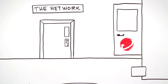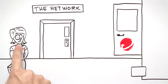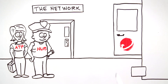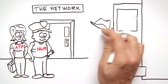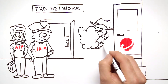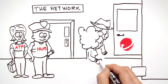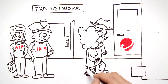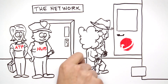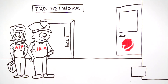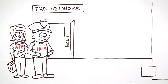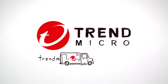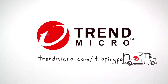Simply put, Tipping Point ATP and NextGen IPS work together to identify, prioritize, and block suspicious objects, defending your organization's network from known, unknown, and undisclosed threats. Trend Micro Tipping Point Integrated Advanced Threat Prevention.